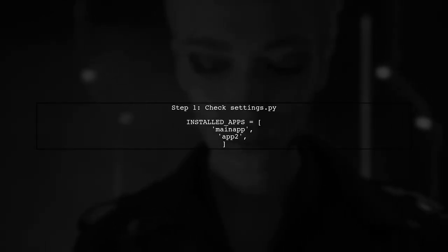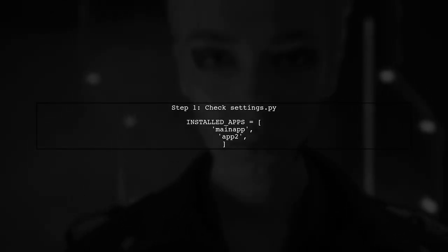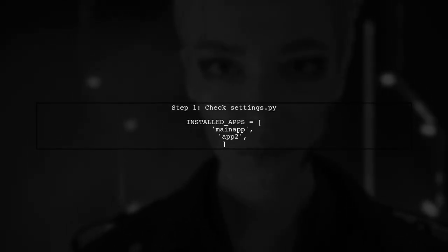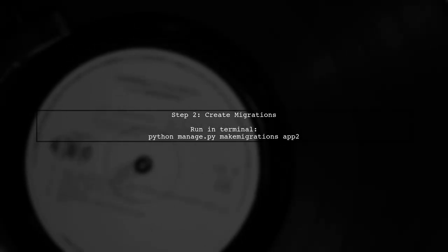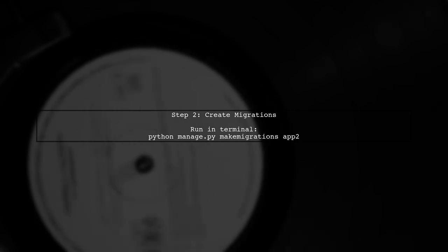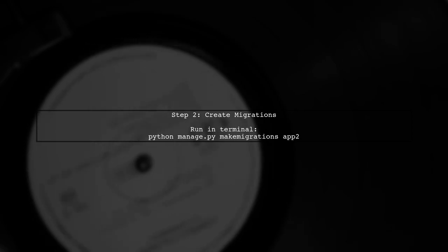To apply migrations for all your Django apps, first ensure that both apps are included in your project settings — check your settings.py file. Next, make sure that you have created migration files for your second app, app2. You can do this by running the makemigrations command.